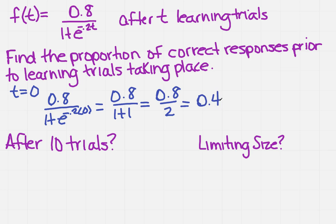It really is that easy. Now what happens if instead of before anything takes place, 10 learning trials have taken place? Well, again, if t is the number of learning trials, I have 10 of them. So t equals 10.